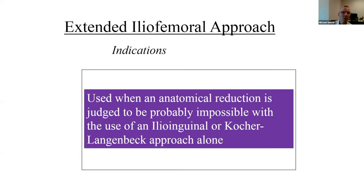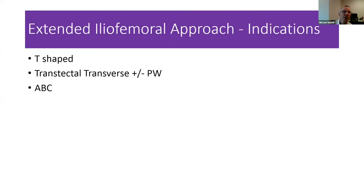We use it when we think that an anatomic reduction is judged to be probably impossible with the use of the ilioinguinal, the Kocher-Langenbeck, or any other approaches used alone. Typically the indications are two-column fractures, the T-shaped fracture, transtectal transverse fractures with or without a posterior wall, and associated both-column fractures.